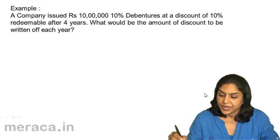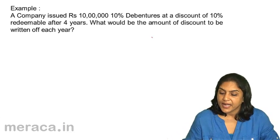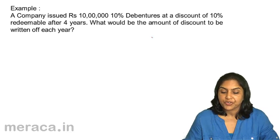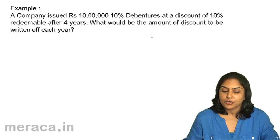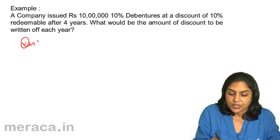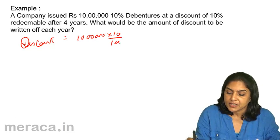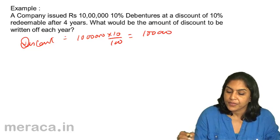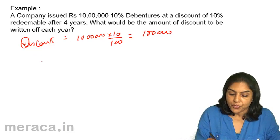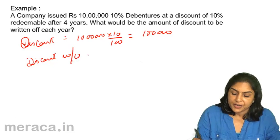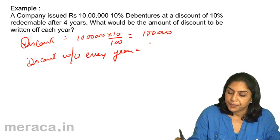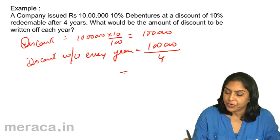Example: A company issued 10 lakh, 10% debentures at a discount of 10%, redeemable after 4 years. What would be the amount of discount to be written off each year? The total discount is 10 lakh × 10% = 1 lakh. Since they are redeemable after 4 years, the discount to be written off every year would be 1 lakh ÷ 4 = 25,000.